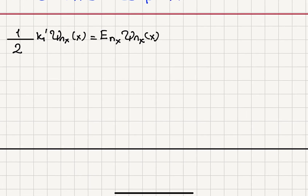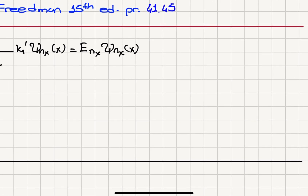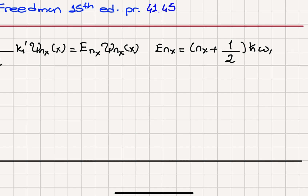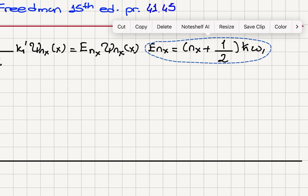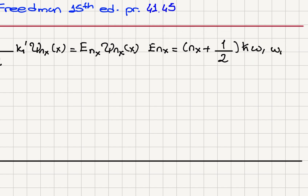The corresponding energy levels are given by Eₙₓ = (nₓ + 1/2)ℏω₁, where ω₁ = √(k₁'/m).